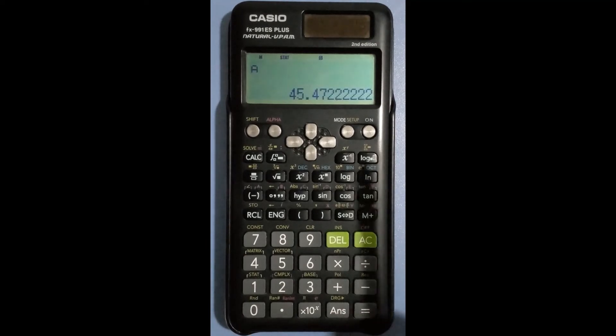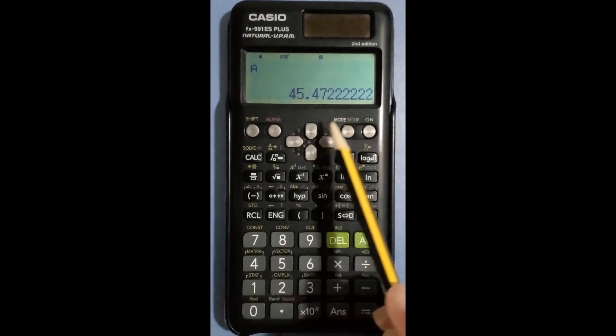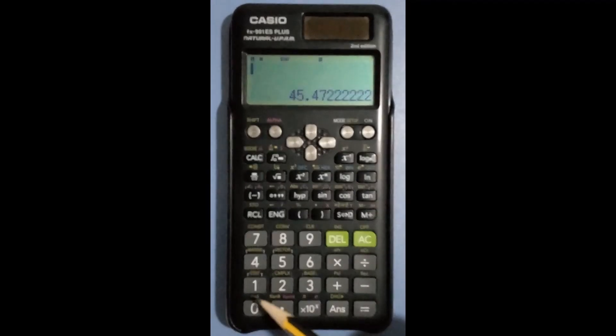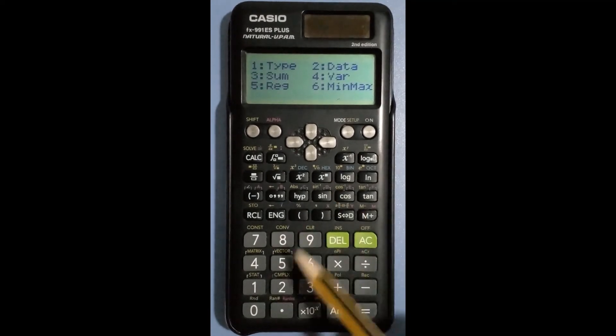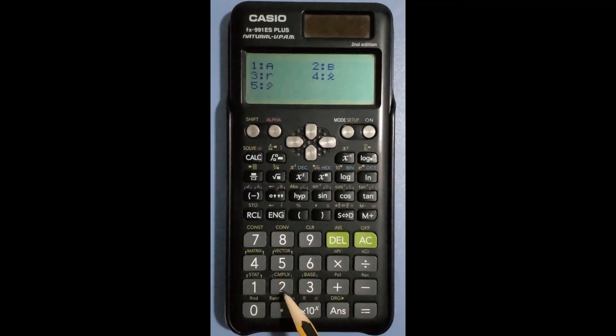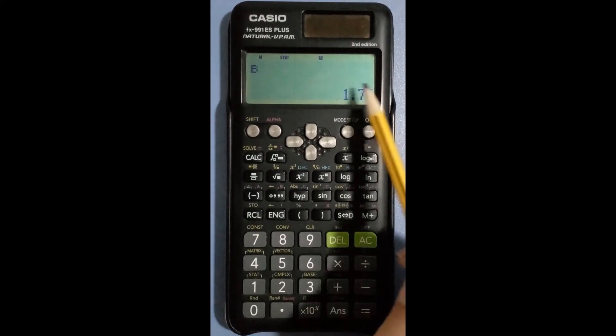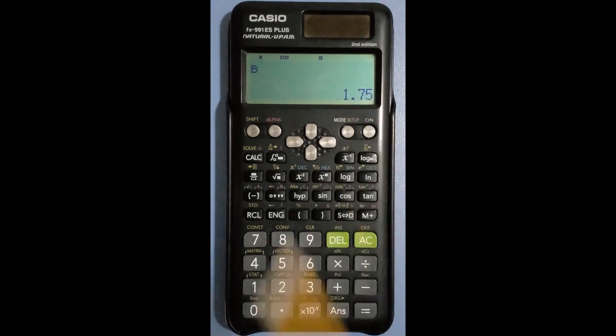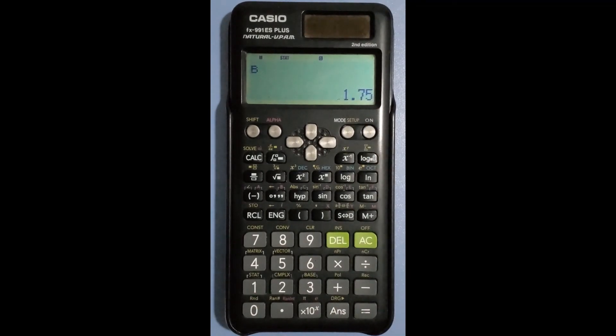Press shift 1 again, then 5, after that 2 to obtain the value of B. Hit equal. The value of B is 1.75. With these few steps you can easily find the coefficients of the linear equation.